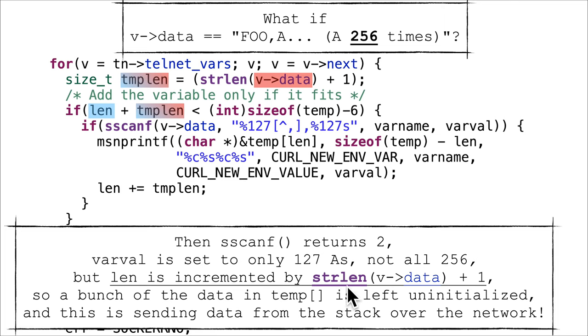But therefore the string length, which is used to calculate templen, which is used to increment length, is too big once again. And we're going to be stepping too far forward and we're going to be leaking uninitialized data.